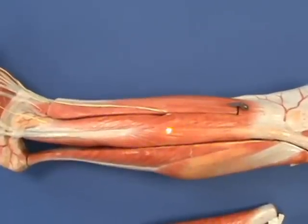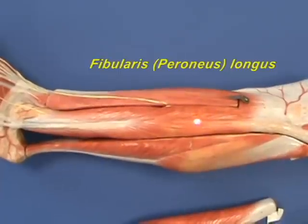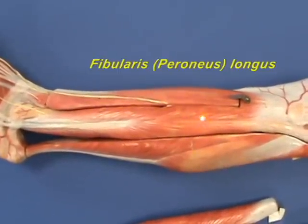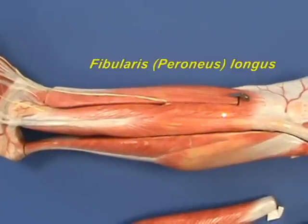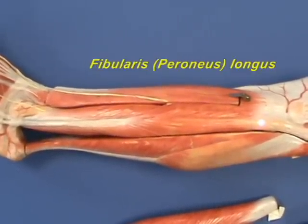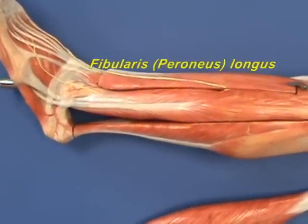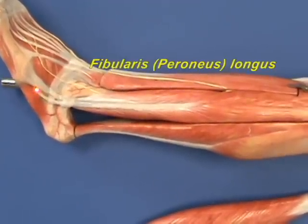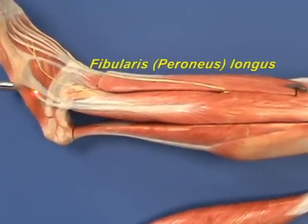First, the fibularis longus. The fibularis longus has an origin on the lateral surface of the proximal fibula, the head of the fibula, and the lateral condyle of the tibia. It inserts by way of a tendon onto the medial cuneiform and the base of the first metatarsal bone.